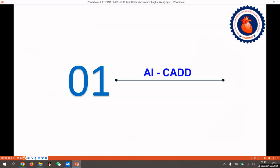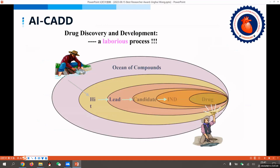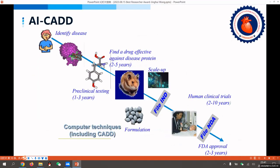As we all know, the cycle of drug development is quite long and the possibility of success is quite low. Through artificial intelligence methods such as computer-aided drug design, the cycle of drug development can be greatly reduced.